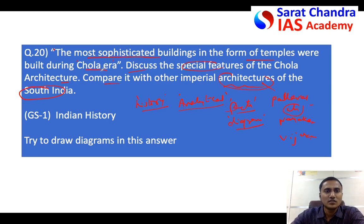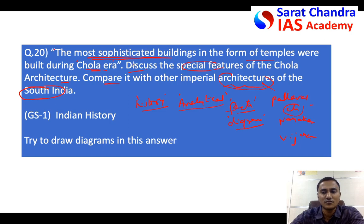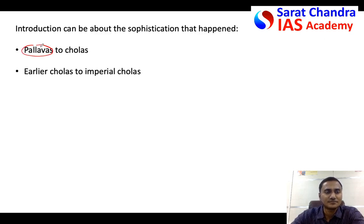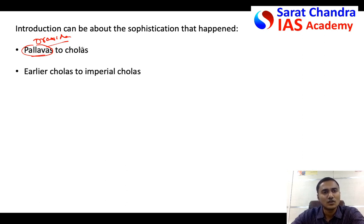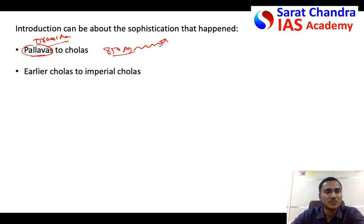In the introduction, we will explain why Chola era is the most sophisticated. You can briefly write the background starting from the Pallavas - you can say that the Dravidian style of temple architecture started during the Pallavas, but by the time of the Cholas it had grown considerably and reached its culmination during the Chola period. Particularly after 850 AD, the growth in Chola architecture was tremendous, reaching its zenith during Rajarajachola and Rajendrachola.